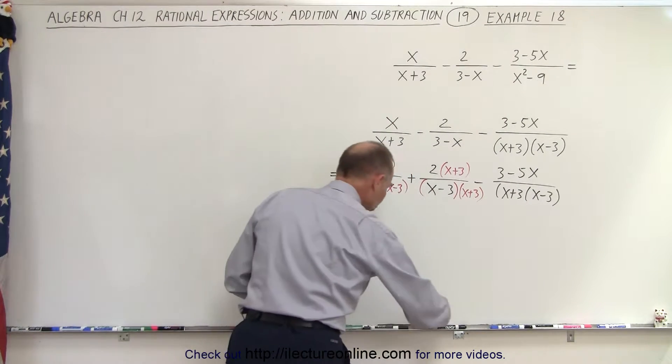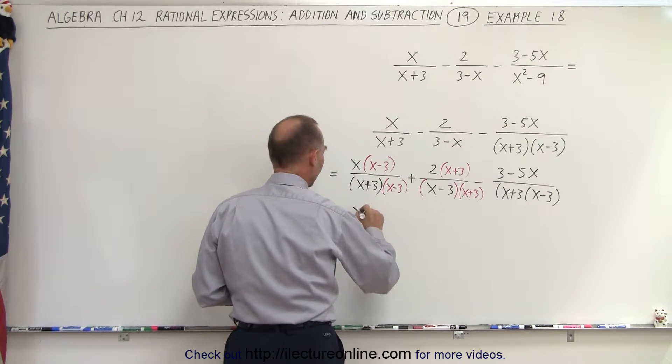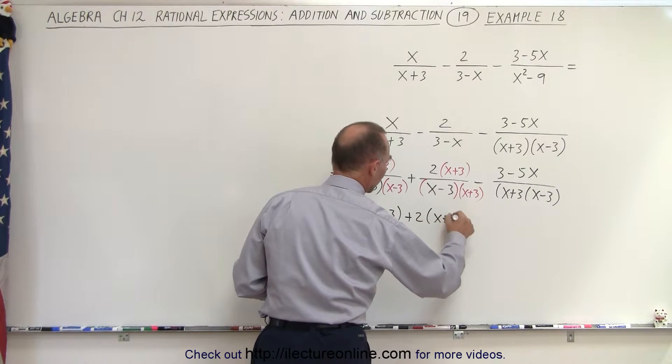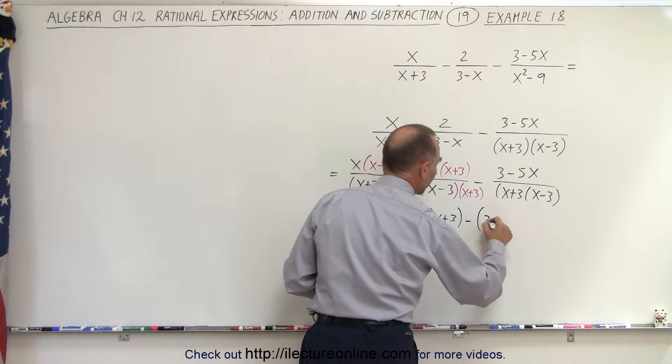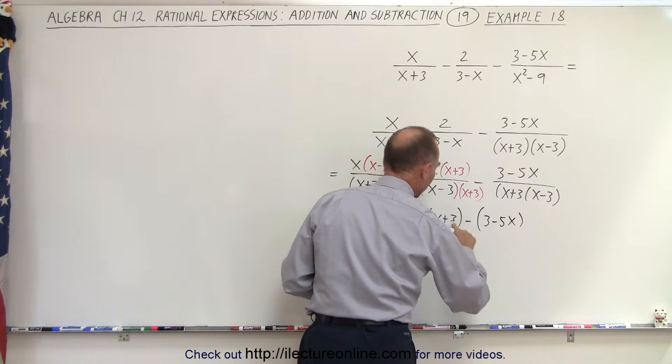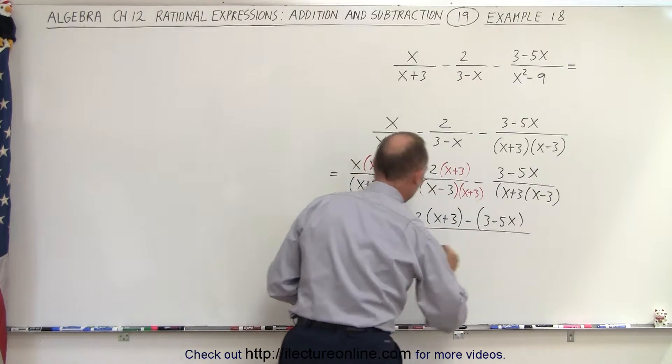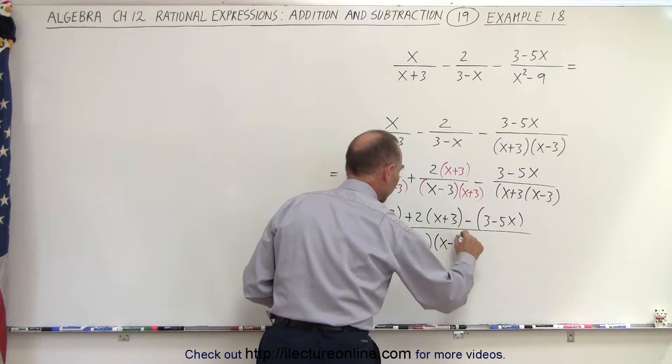I can now write all the numerators over one single common denominator. So this is x times x minus 3 plus 2 times x plus 3, and then minus the quantity 3 minus 5x. This is a 3. All divided over the common denominator of x plus 3 times x minus 3.